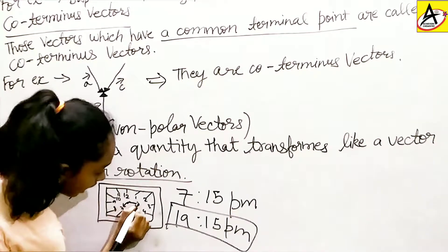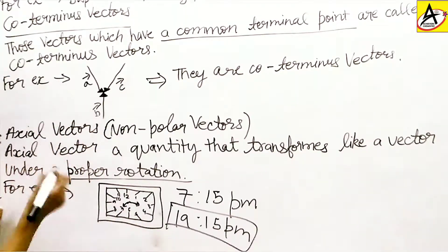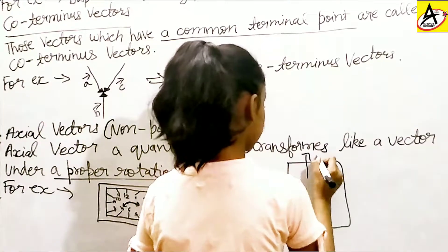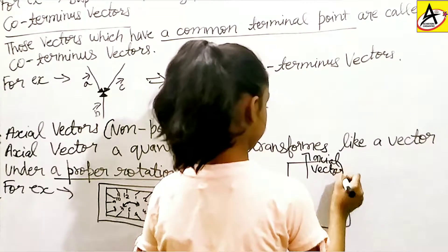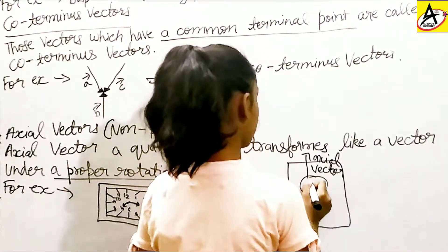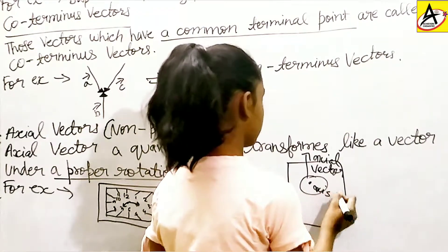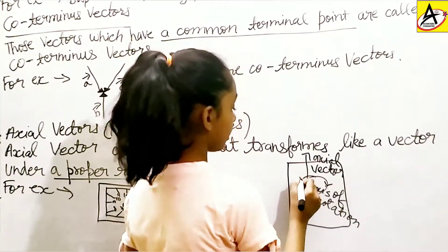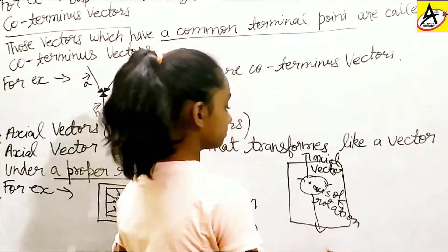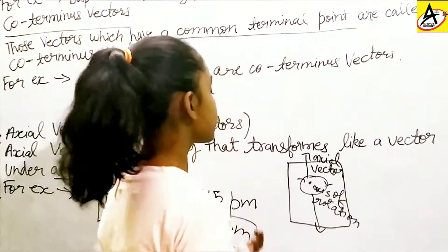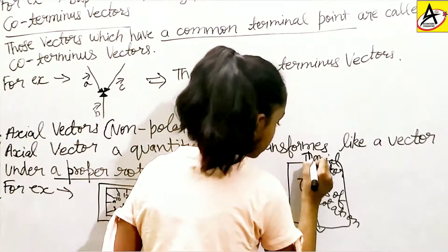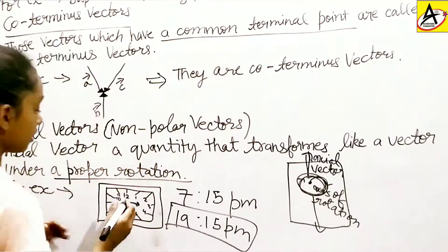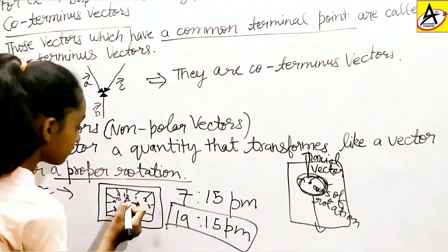This midpoint of the clock is the axis of rotation, and the clock hands are the axial vectors. The axis of rotation is fixed in one place, but the axial vectors are moving around it. Remember that it can go from right to left or left to right.